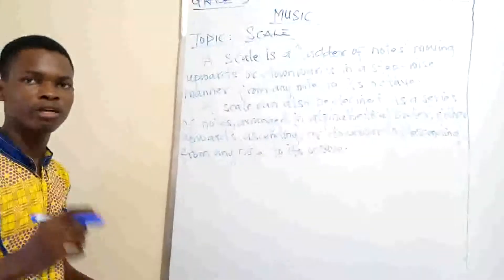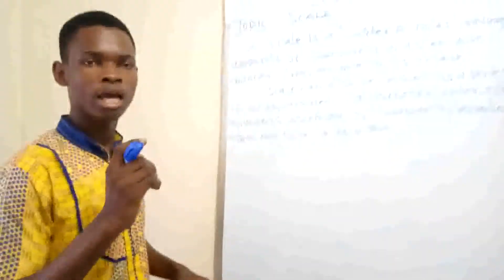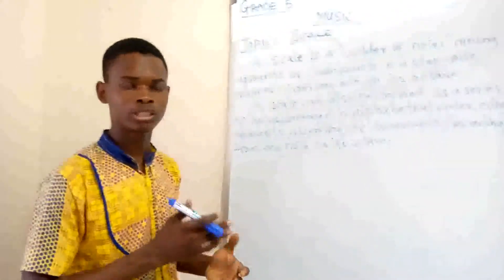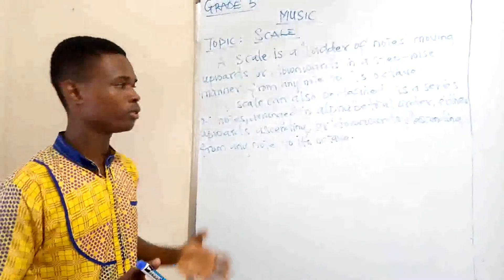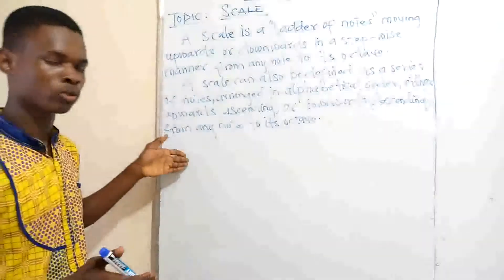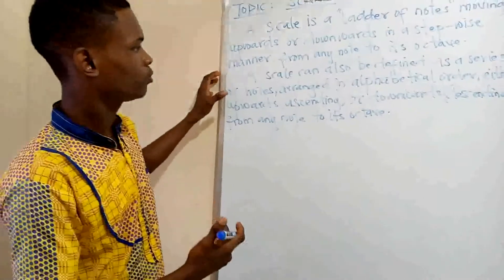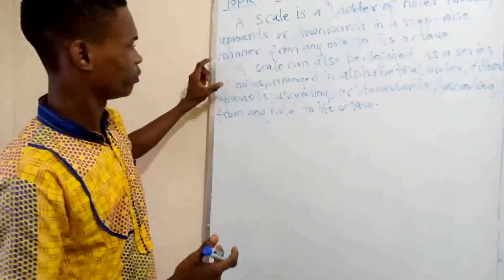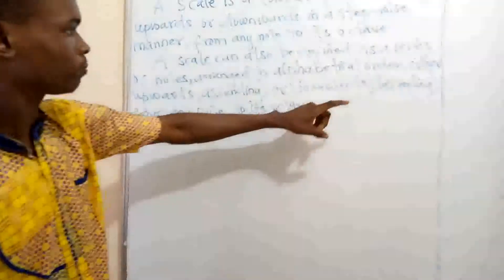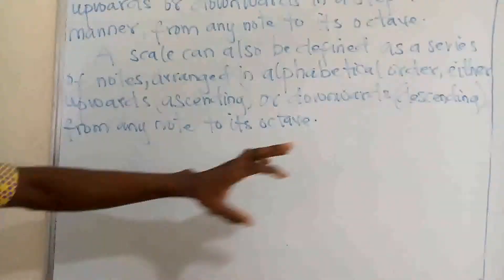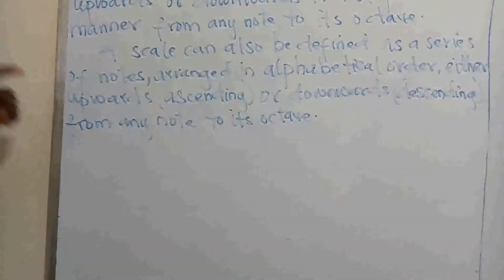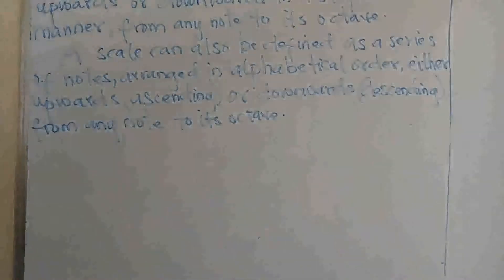It starts from any note to its octave. An octave is a circle or a series of eight notes. You can also see a scale as a series of notes arranged in alphabetical order, either upwards — that's ascending — or downwards — that's descending — from any note to its octave.